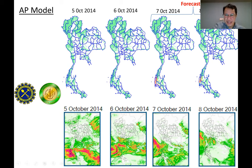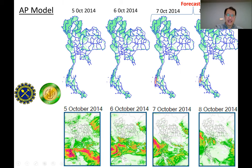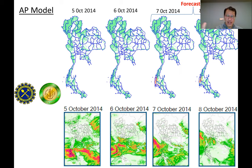However, if we are able to predict the precipitation ahead of time, like two or three days, we can also predict the possibility of a landslide. In Thailand, we are able to predict the rainfall amount in advance for about three or four days, and we can use that information to predict the possibility of landslide.